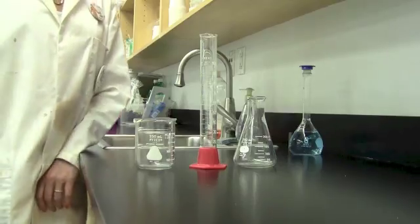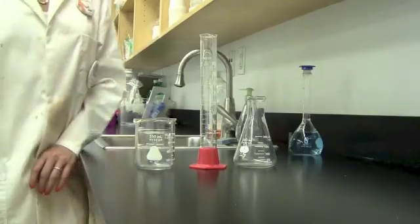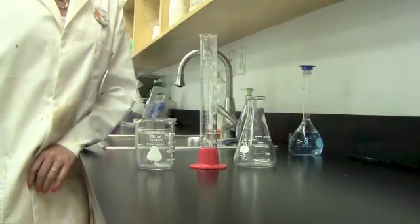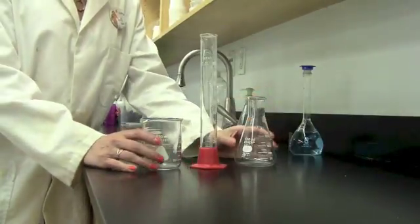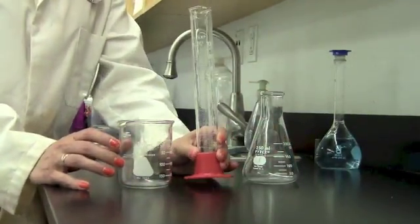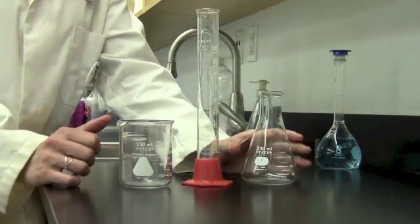Now we're going to look at how to measure volume of a liquid. When you look in the cabinet of glassware above your lab station, you'll find these three pieces of glassware. We have a beaker, a graduated cylinder, and a flask.